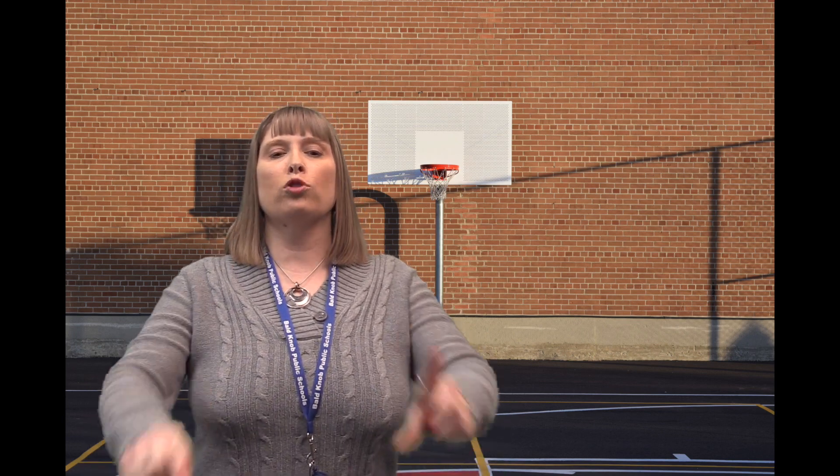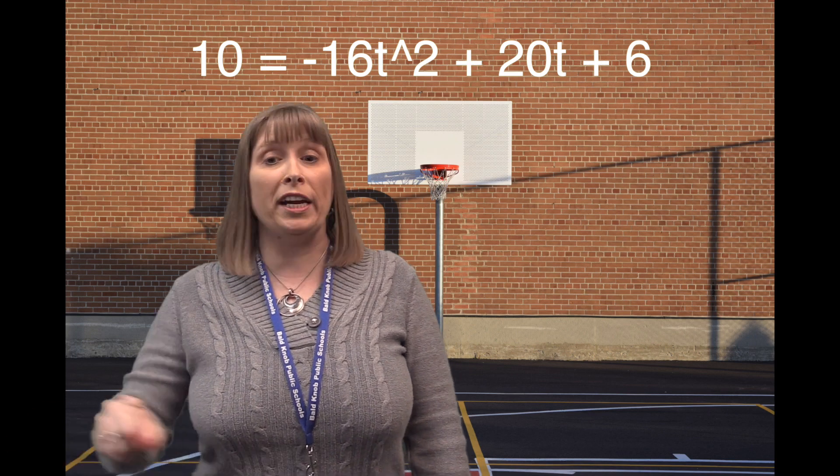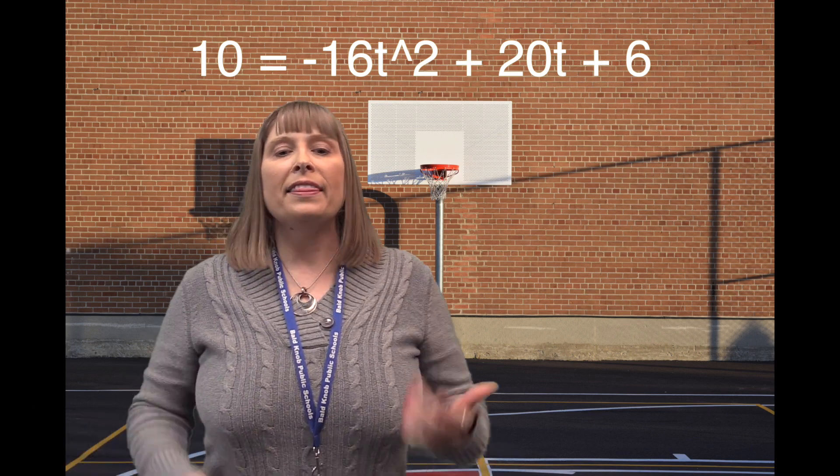So, if Billy needs to make one more basket before that buzzer goes off, let's take into consideration that Billy is 6 feet tall, the hoop is 10 feet from the floor, and he shoots at a velocity of 20 feet per second from the free throw line. When does he need to shoot the ball to make sure it makes it before the buzzer? So our equation becomes: 10 equals negative 16t squared plus 20t plus 6. This means he only needs one second of air time to make the basket.